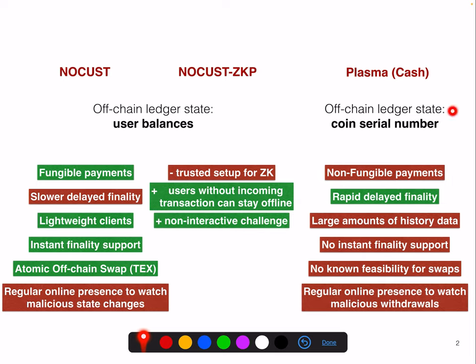PlasmaCache is a very famous Plasma variant. It represents a coin as a serial number. It doesn't support fungible payments, but it allows for rapid delayed finality, which is great. Payments can be quite fast without collateral. The disadvantage is that users have to verify a large amount of historical data, you don't have instant finality support, there's no feasibility to perform swaps, and you also need to be regularly online to watch for malicious withdrawals.